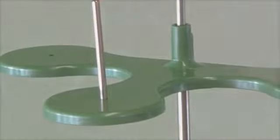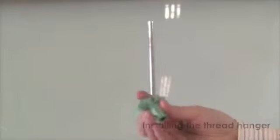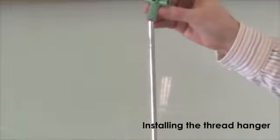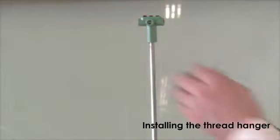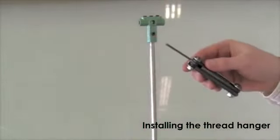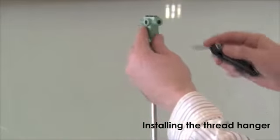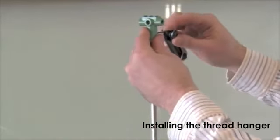You are now ready to install the thread hanger. Begin by sliding the thread hanger support over the top of the threadstand support rod. After you have rotated it to face the location of your sewing machine, tighten the set screw in the neck of the support.